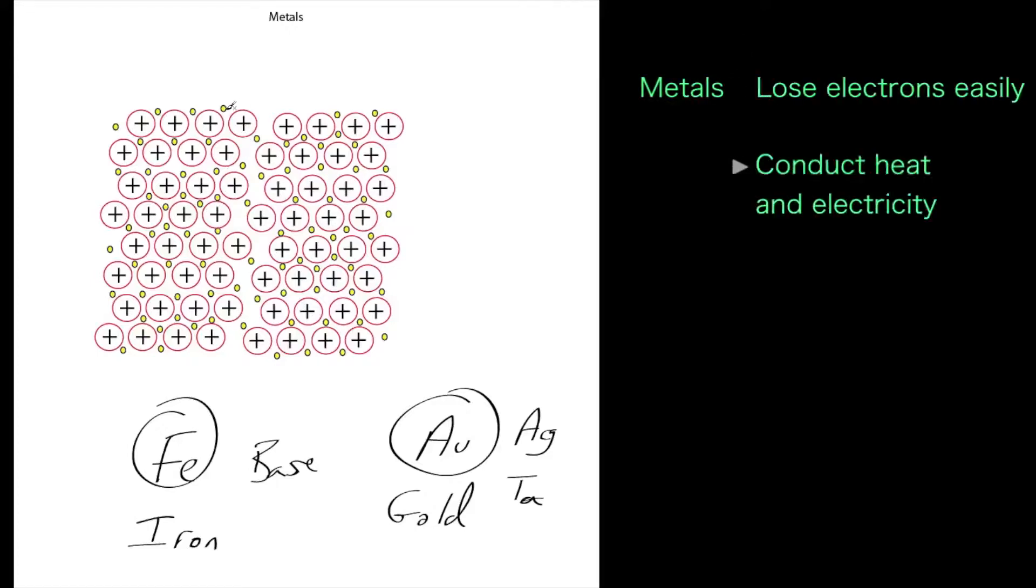They're easily oxidized, so something like a metal - I'll call it M - can go to M⁺ charged plus an electron e⁻. Metals can easily lose electrons and become charged, which means they can react with other elements to form metal halides for example.